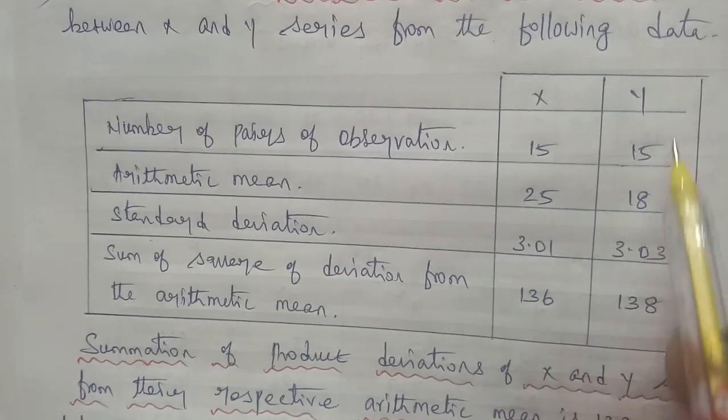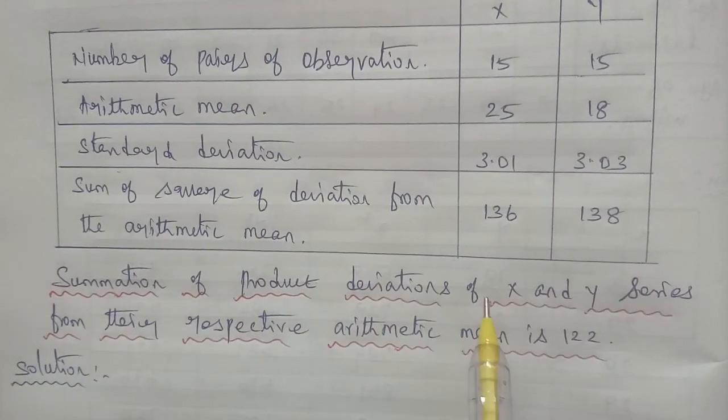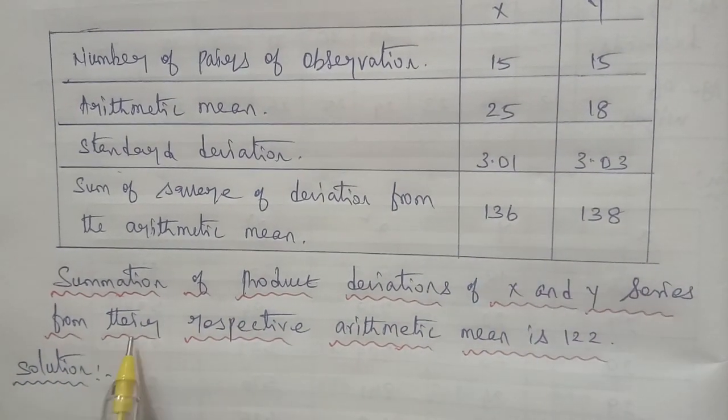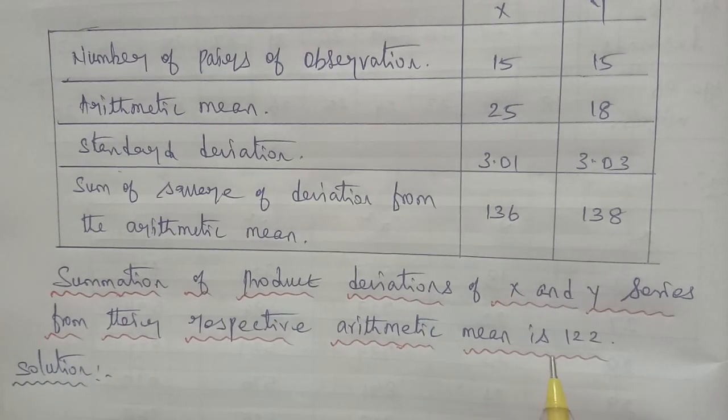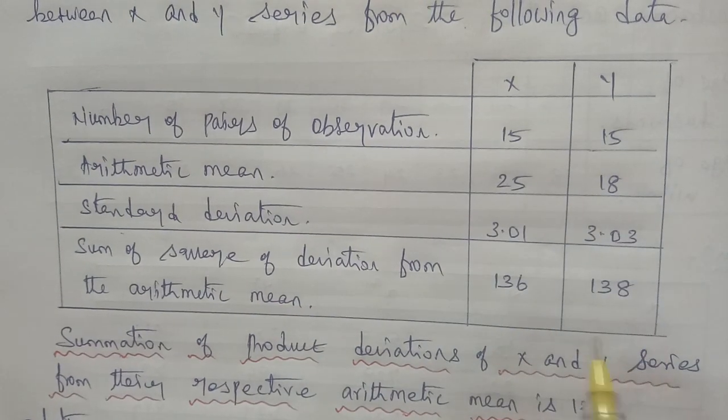And sum of the square deviation from arithmetic mean 136 and 138. So this is the X data, Y data. And given in the question, use the formula here.